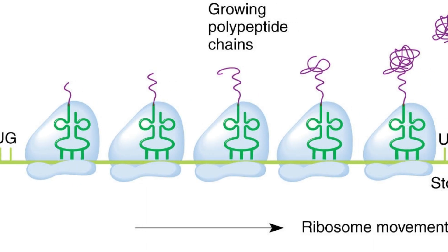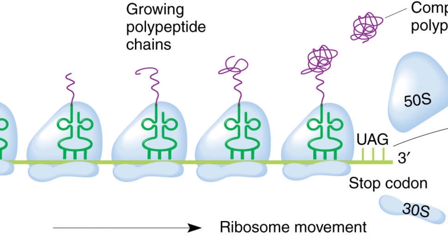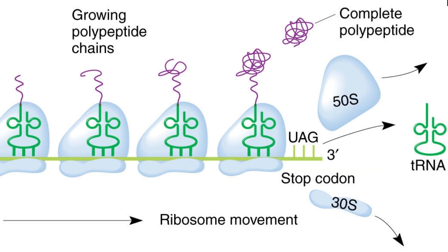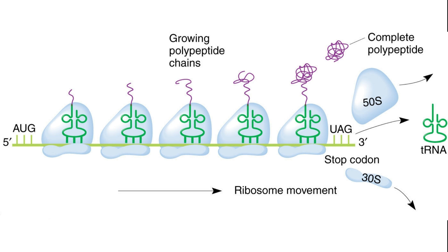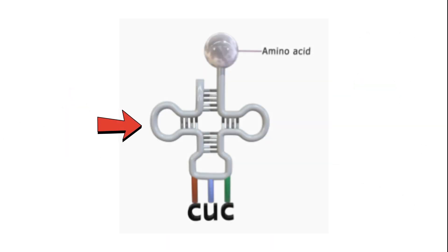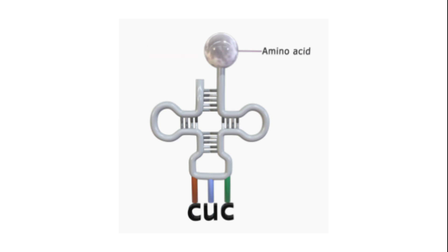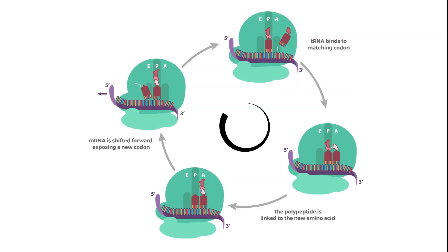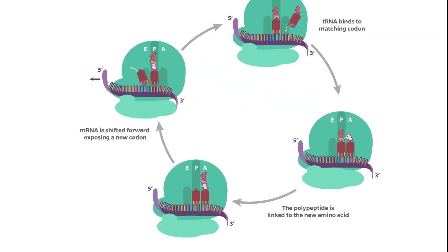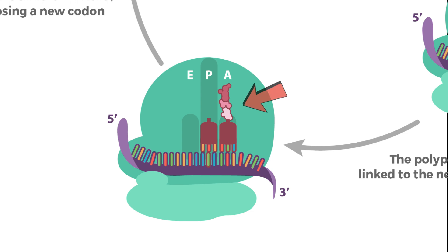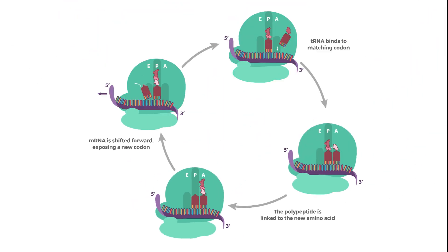During the elongation phase, the ribosome reads the mRNA codons sequentially, attracting transfer RNA molecules with matching anticodons. Each tRNA molecule carries a specific amino acid that corresponds to the codon being read. The ribosome's peptidyl transferase center catalyzes the formation of peptide bonds between adjacent amino acids, gradually building the protein chain.